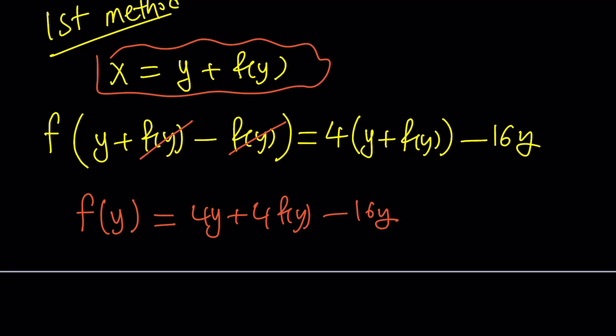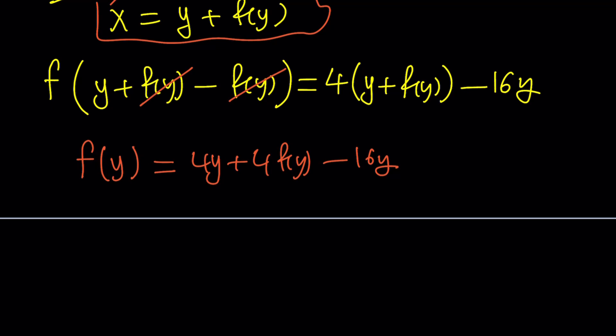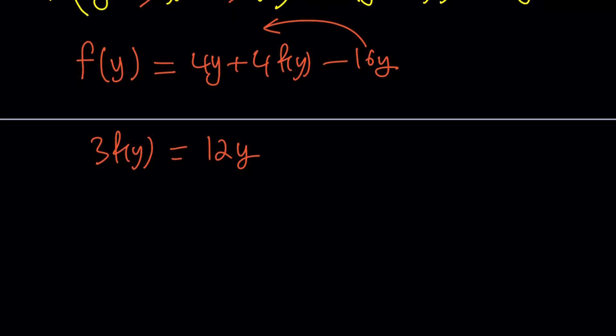We can simplify this. First of all, we can go ahead and subtract f(y). That's going to give us 3f(y). Let's do it on the right-hand side, and then bring it to the left-hand side. And then, let's bring this to the left-hand side and subtract the 4y, and that's going to give us 12y. So, I kind of switched sides, so hopefully that makes sense. And then, after this, we can go ahead and divide both sides by 3, and we'll get f(y) = 4y. Great.